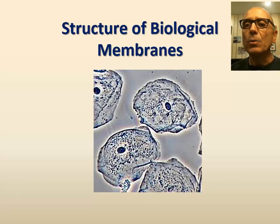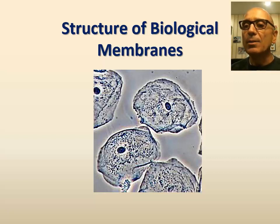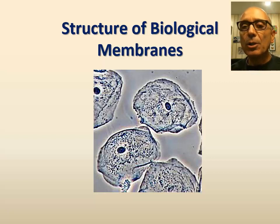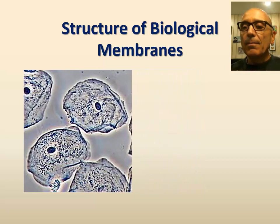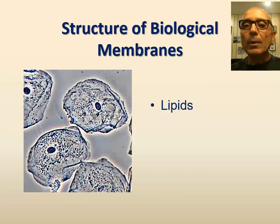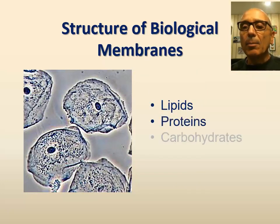Biological membranes, whether they surround cells or organelles, all have the same generalized structure, which consists of three major components: first, lipids; proteins; and carbohydrates.